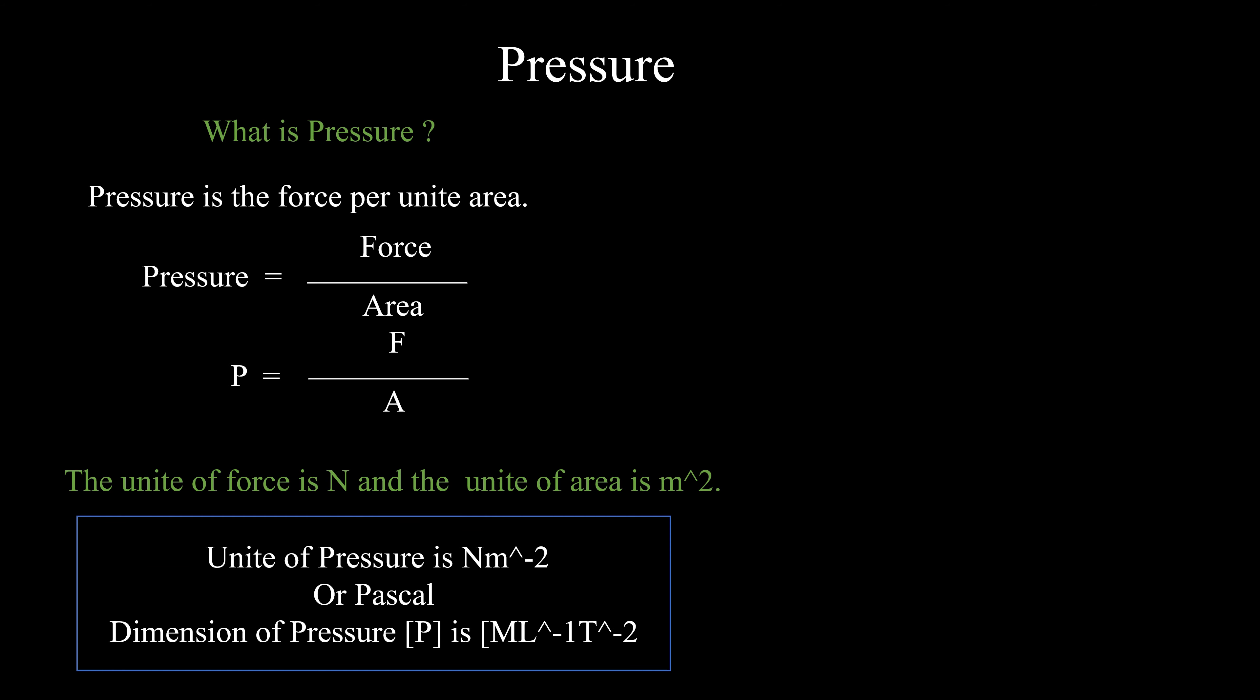So the unit of pressure is Newton meter inverse 2 or Pascal. Dimension of pressure is ML inverse 1 T inverse 2. If a force of 20 Newton is applied on an area of 10 meter square, the pressure will be 2 Newton meter inverse 2.